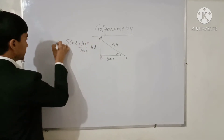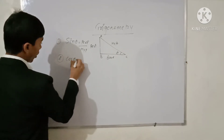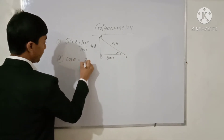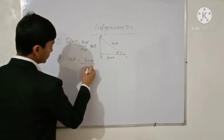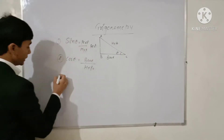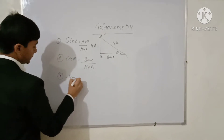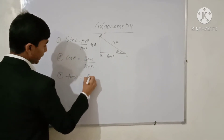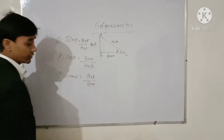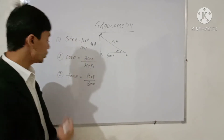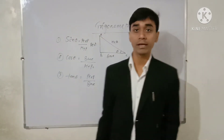The next Trigonometric ratio is cos theta. Cos theta is defined as base over hypotenuse. The next ratio is tan theta. Tan theta is defined as perpendicular over base. These three terms — sin, cos, and tan — are known as the basic Trigonometric ratios.